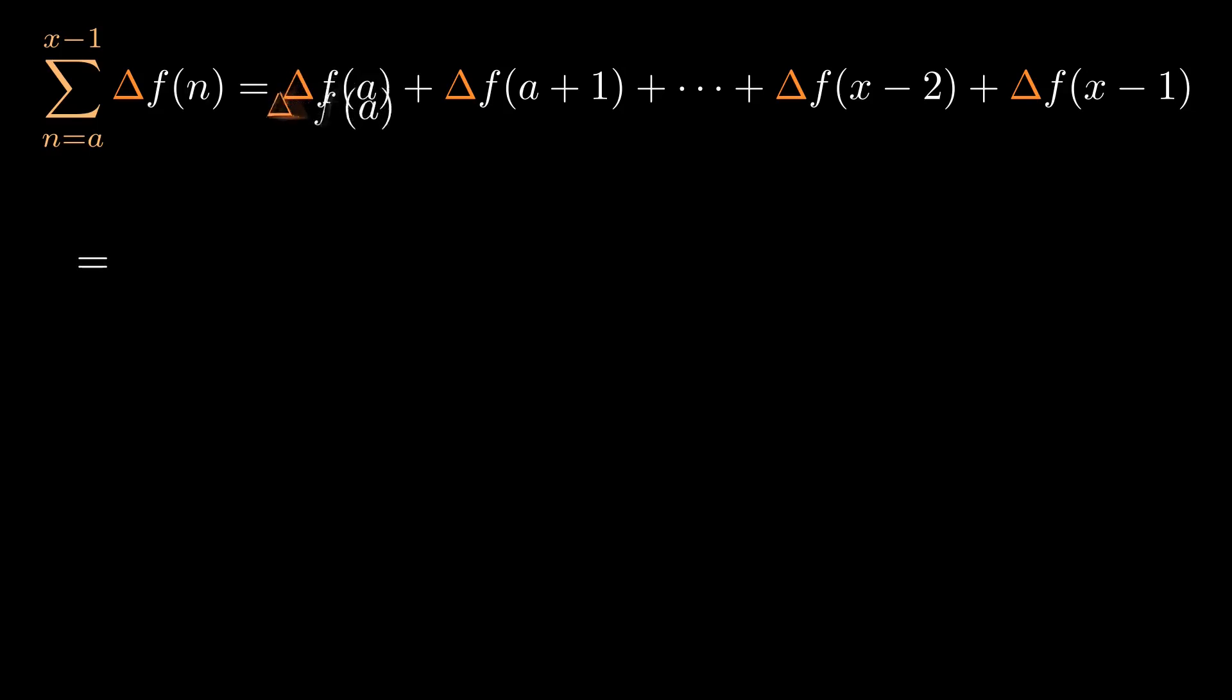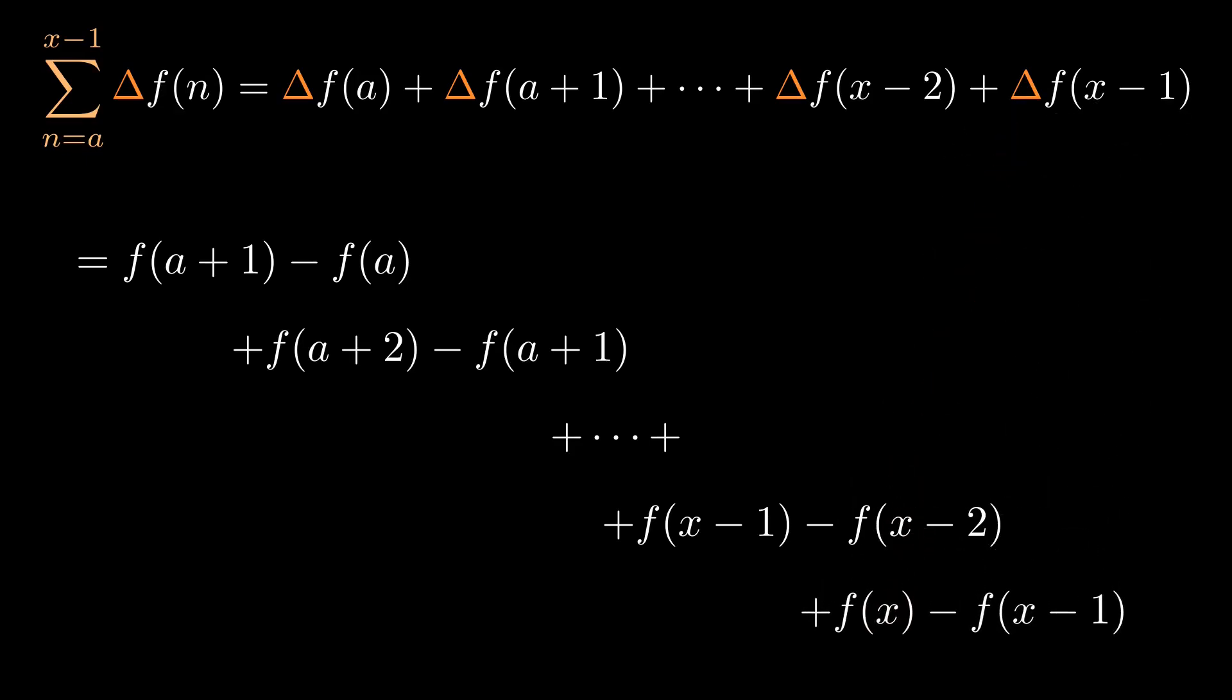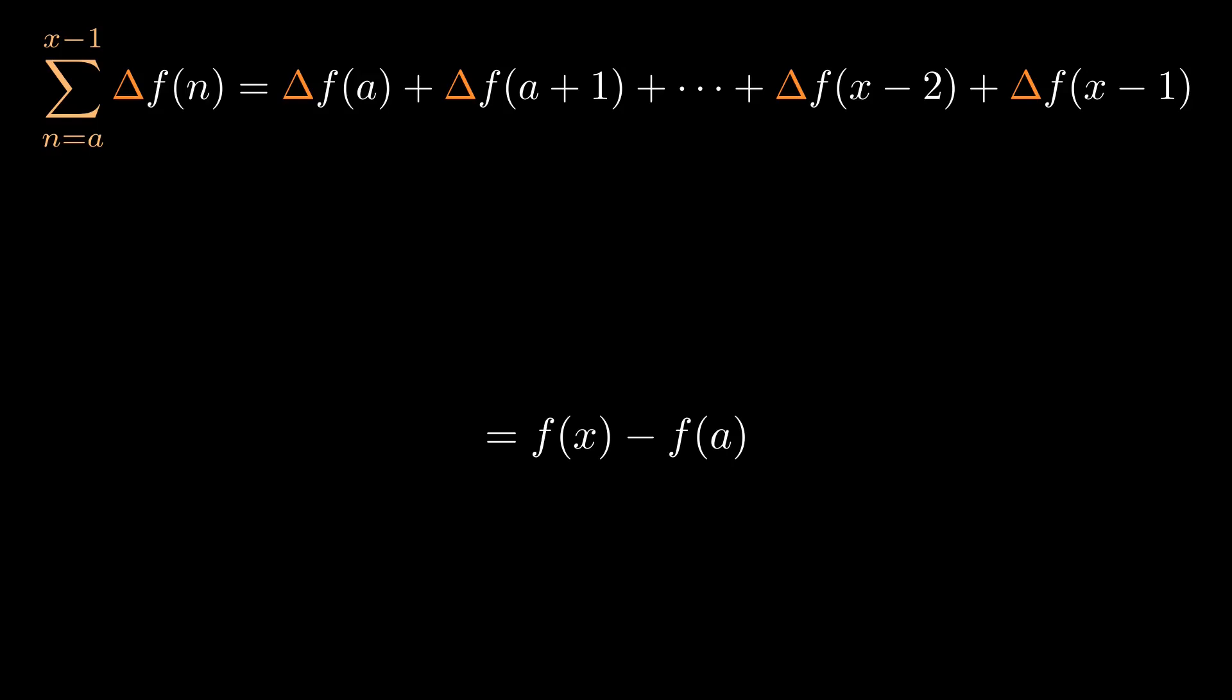Write out these deltas in full using the definition. Swap some terms around, and suddenly everything just cancels out, leaving us with just f of x minus this constant term, f of a.